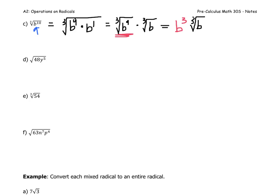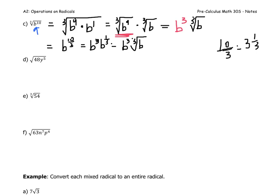Another technique is to rewrite as a fractional exponent. The cube root of b to the 10 is the same as b to the power of 10 over 3. Now, 10 thirds equals 3 and 1 third, so this is like b to the power of 3 times b to the power of 1 third. Rewriting b to the 1 third in radical form gives the same result.